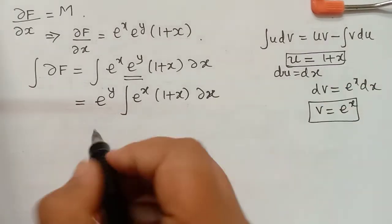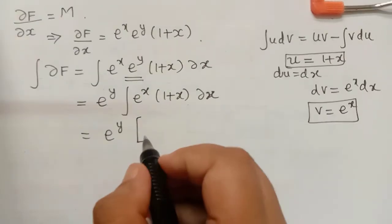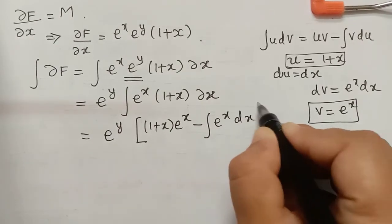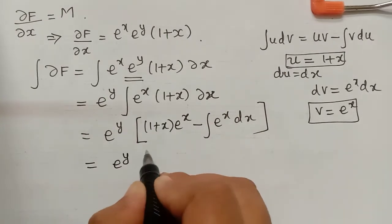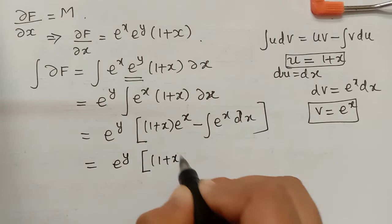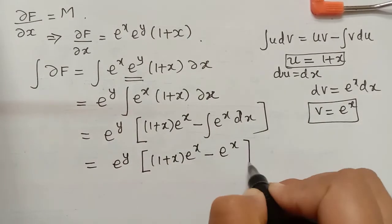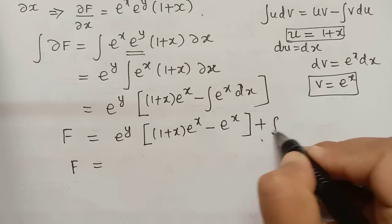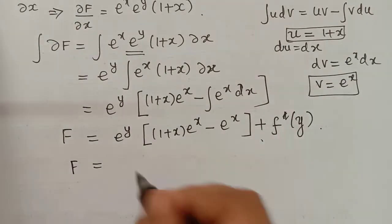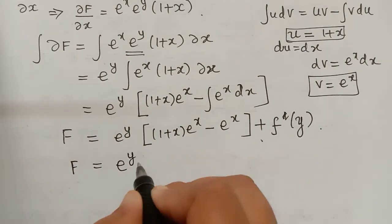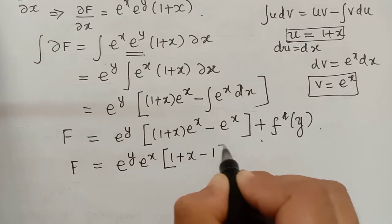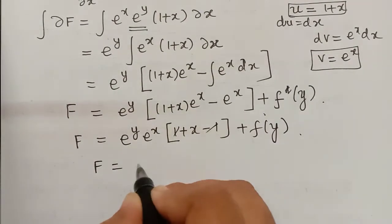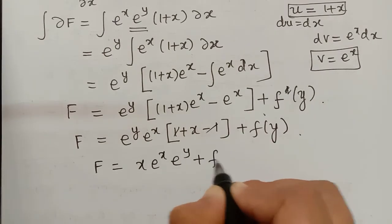Substituting into the uv formula: F = e^y [(1 + x)e^x − ∫e^x dx] = e^y [(1 + x)e^x − e^x] + f(y). Simplifying, e^x is common: F = e^y · e^x(1 + x − 1) + f(y), which gives F = x·e^x·e^y + f(y).